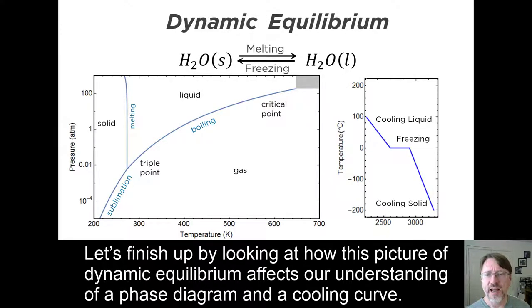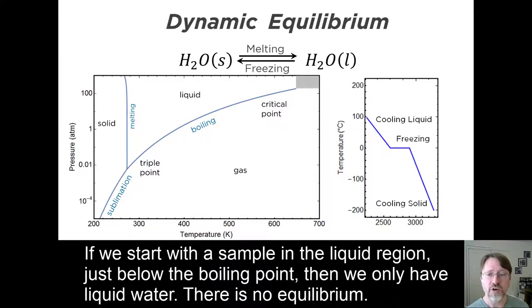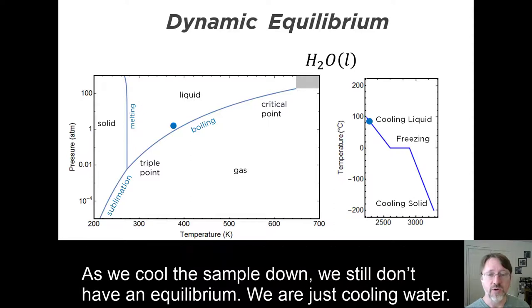Let's finish up by looking at how this picture of dynamic equilibrium affects our understanding of a phase diagram and a cooling curve. If we start with the sample in the liquid region, just below the boiling point, then we only have liquid water. There is no equilibrium. As we cool the sample down, we still don't have an equilibrium. We are just cooling water.